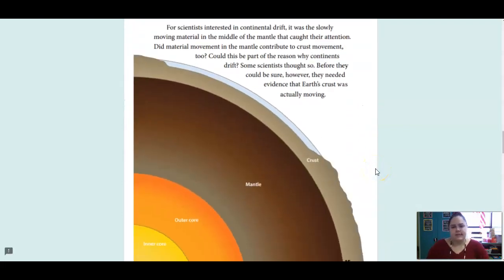For scientists interested in continental drift, it was the slowly moving material in the middle of the mantle that caught their attention. Did material movement in the mantle contribute to crust movement, too? Could this be part of the reason why continents drift? Some scientists thought so. Before they could be sure, however, they needed evidence that Earth's crust was actually moving.